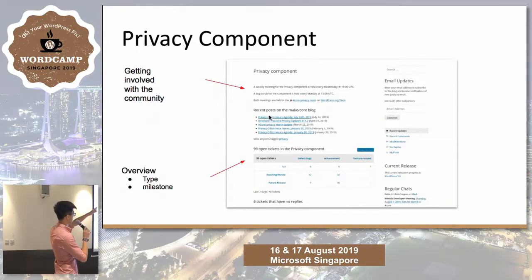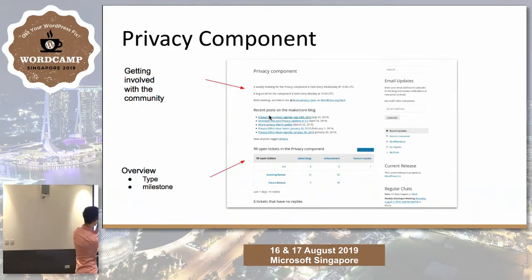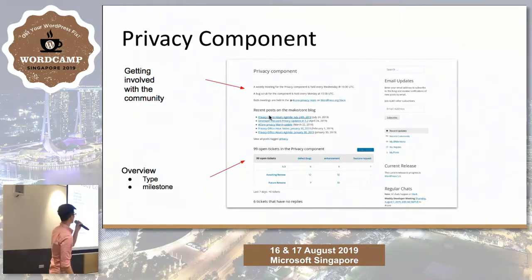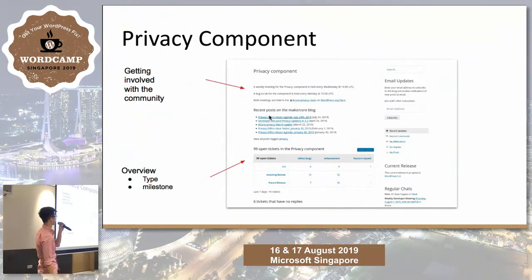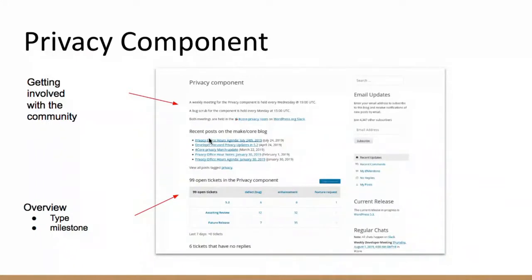I want to highlight two key pieces of information. First is getting involved with the community — there are weekly meetings and bug scrubs done over Slack. At an agreed time, people come online and chat: 'Hey, I'm having problems with this bug, can you help me fix it?' They brainstorm together. WordPress's philosophy is to work decentralized — you can work from your office, from any country, and still hold meetings. I think that's amazing.